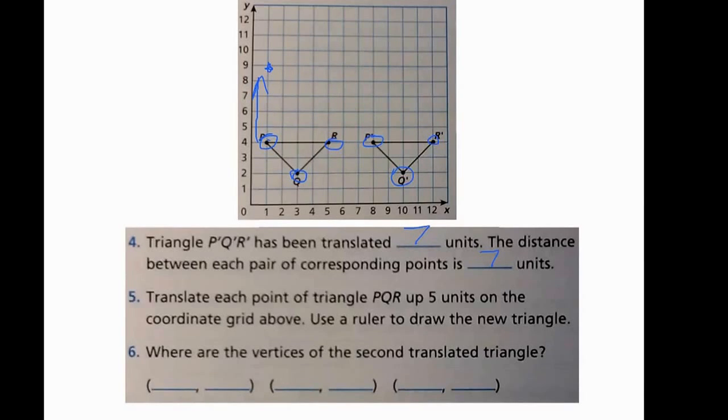Next, I will translate or slide point Q up 5 units. So again, counting up from the 2 that it's at right now on the y-axis, count up 5, and the new Q would be at 7 on the y-axis. And again, for point R, it's already at 4, so then I would translate that up 5 units to 9.